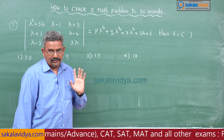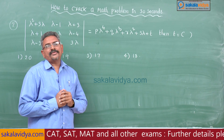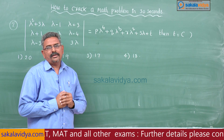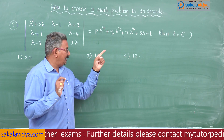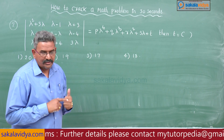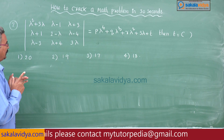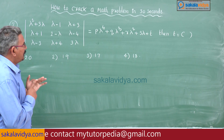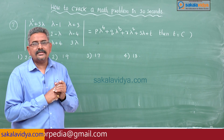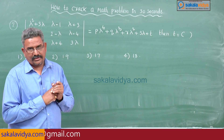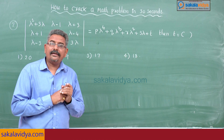Then t is equal to — just observe the options. In this problem, options play a major role. If you check the options: first is 20, second is 19, third is 17, fourth is 18. That means t is constant — absolutely constant.